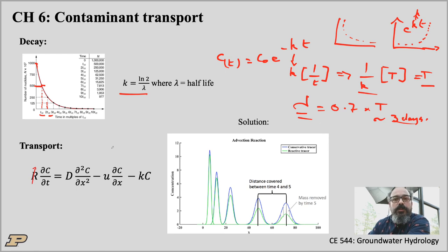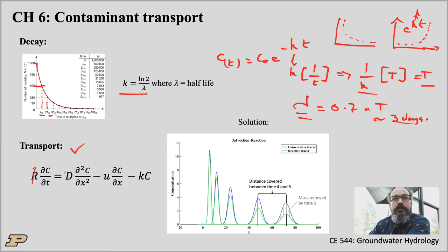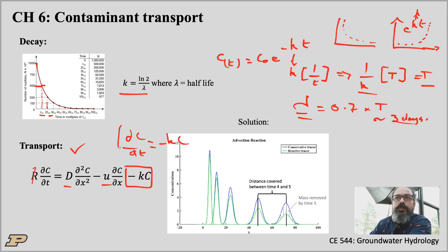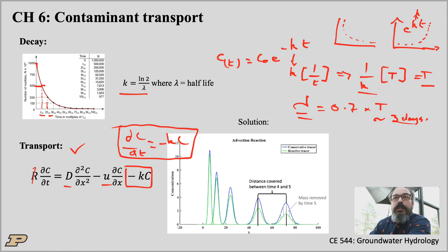How do these chemical discussions fit into our transport equation? Going back to the basic transport equation with a retardation factor R: the change in concentration over time equals some dispersion process plus some advective process. We now add a new term for a first-order reaction — because dC/dt equals minus KC for a first-order reaction, we add this decay term. The full equation now includes dispersion, advection, decay, and retardation.